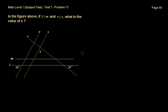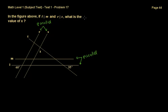Problem 17 is a geometry problem. In the figure above, L is parallel to M and R is parallel to S — so those two pairs of lines are parallel. What is the value of x? We also know this angle is 60 degrees and this angle is 35 degrees.